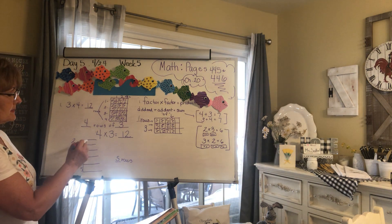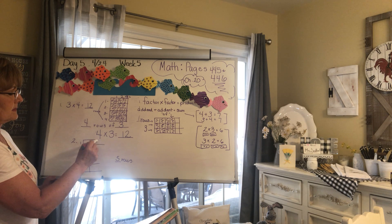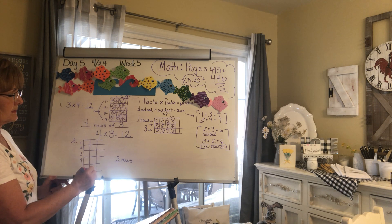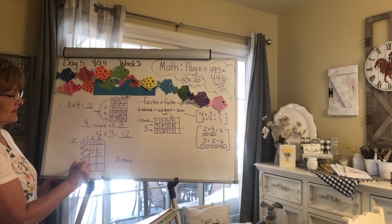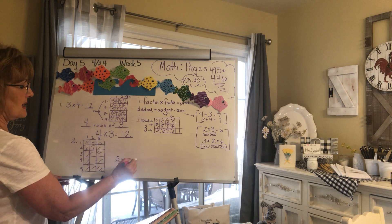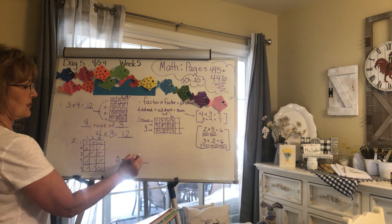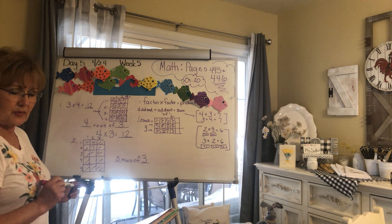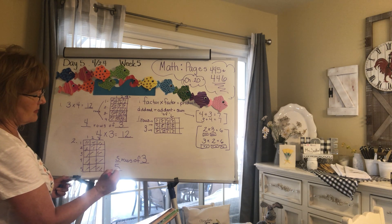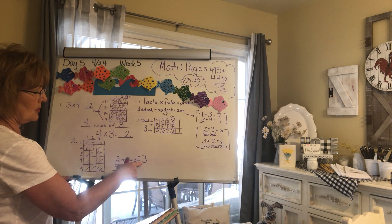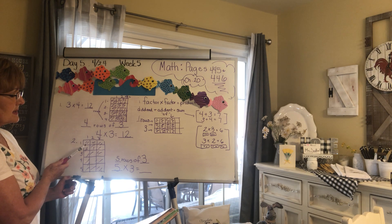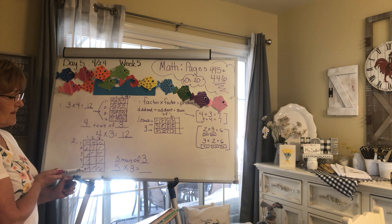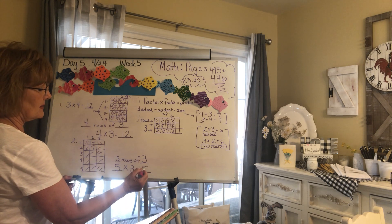How many are in each row? One, two, three — they're all shaded. So you have five rows of three. Your multiplication would be five times three. Count by threes: three, six, nine, twelve, fifteen — five times three is fifteen.